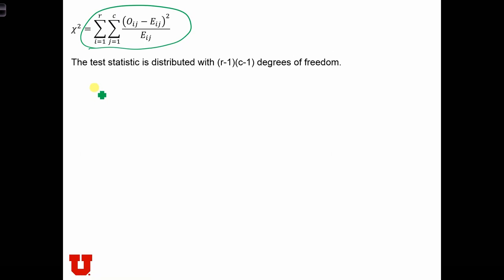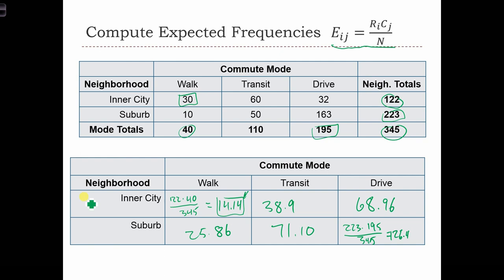So we've got 30 minus 14.14 squared over 14.14 plus 16 minus 38.9 squared over 38.9. Plus 32 minus 68.9 squared over 68.9. So that was the first row of the table.